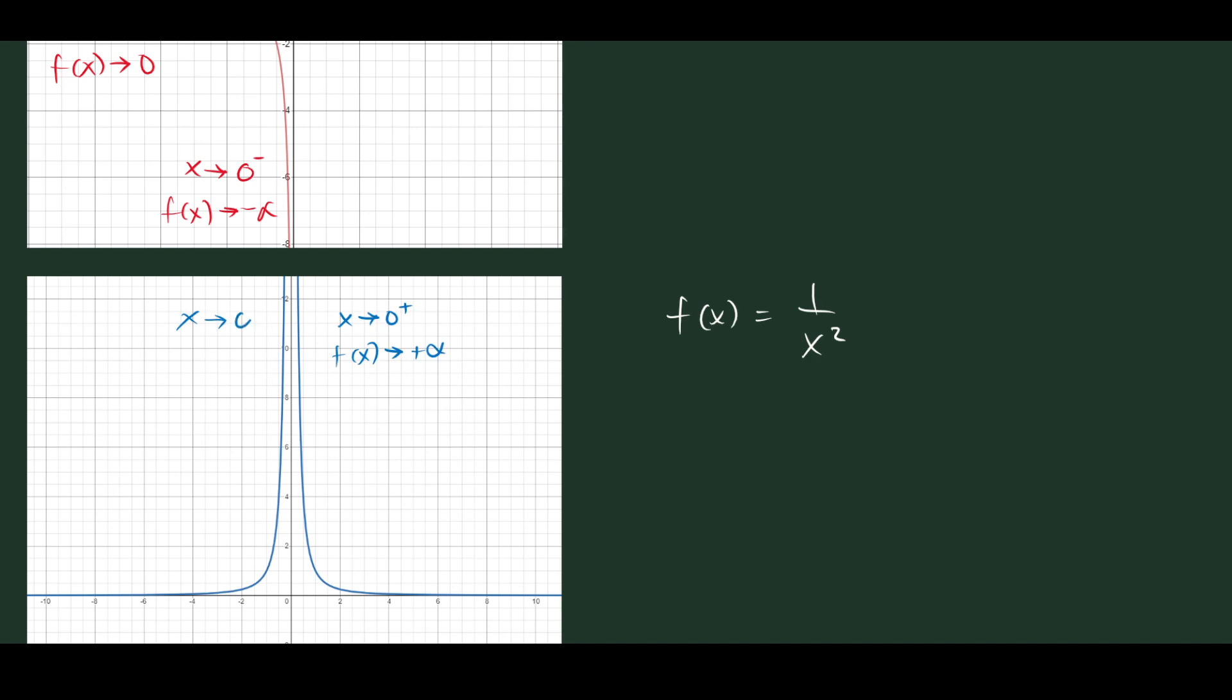Now, it's the same thing on the left. If you approach 0 from the left, f(x) still approaches positive infinity. So it still goes up. How about here? As x approaches positive infinity, we have f(x) approaches 0. And then, as x approaches negative infinity, we have f(x) approaches 0.